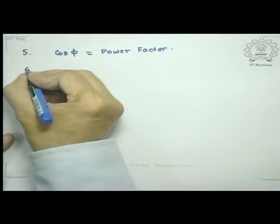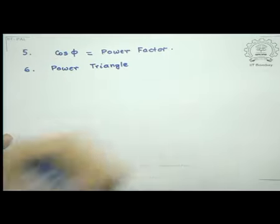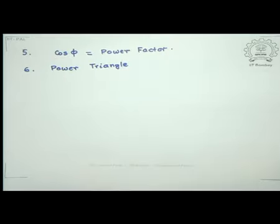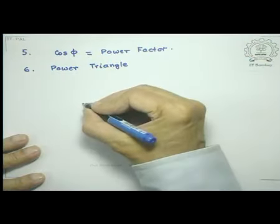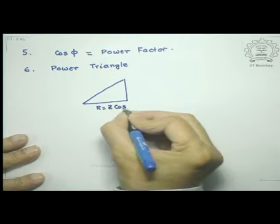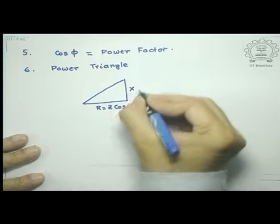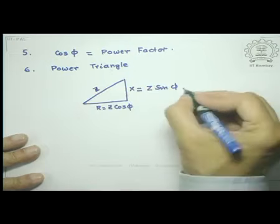Now let us look at what is known as a power triangle. Remember the three basic elements L, C and R which contribute to electrical power in an AC circuit are represented by three sides of a right angle in an impedance triangle. The resistance R equals Z cos phi, the net reactance X — which comes from the capacitive and inductive reactances — equals Z sin phi, and the impedance itself is represented by the hypotenuse Z.